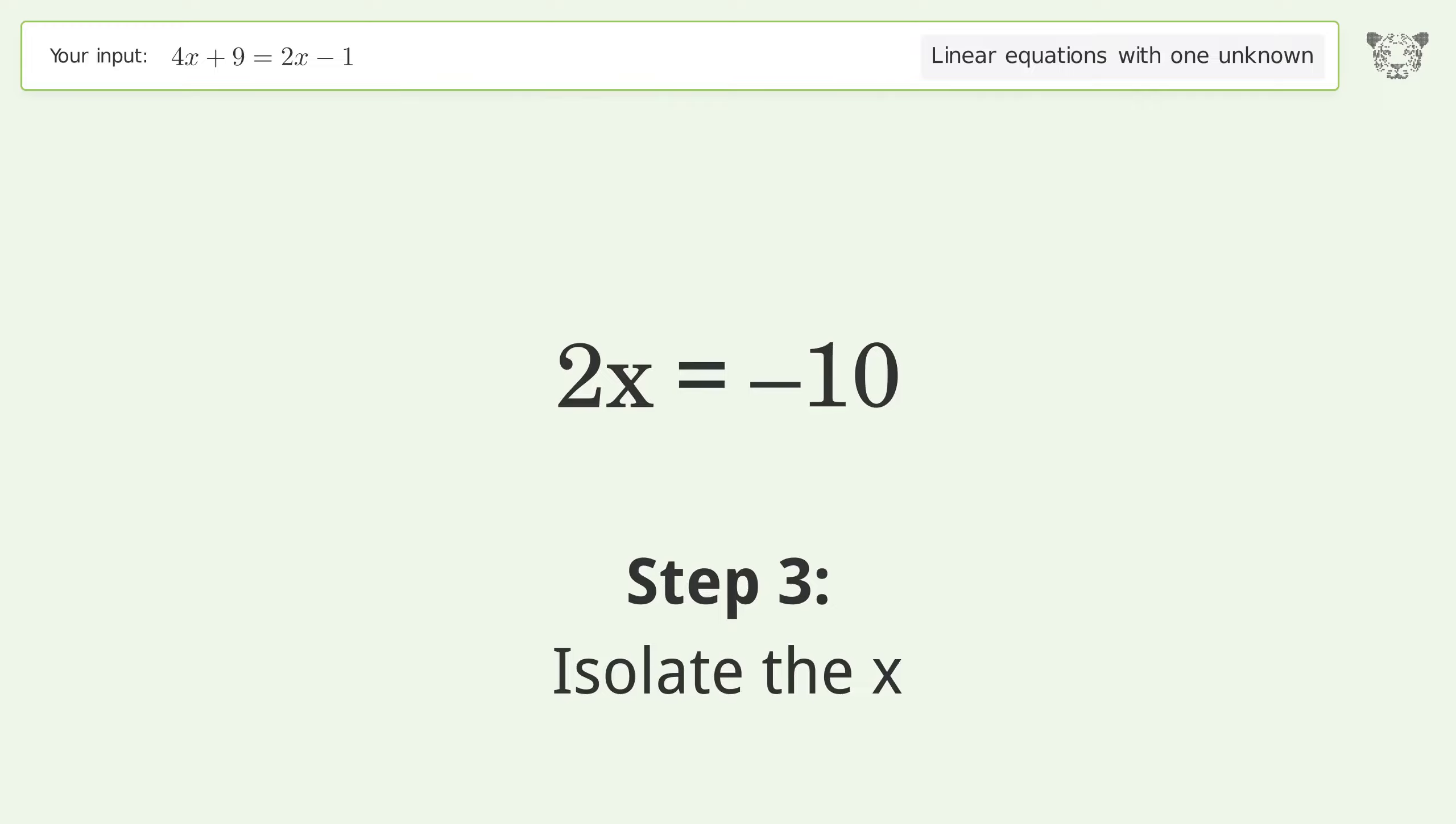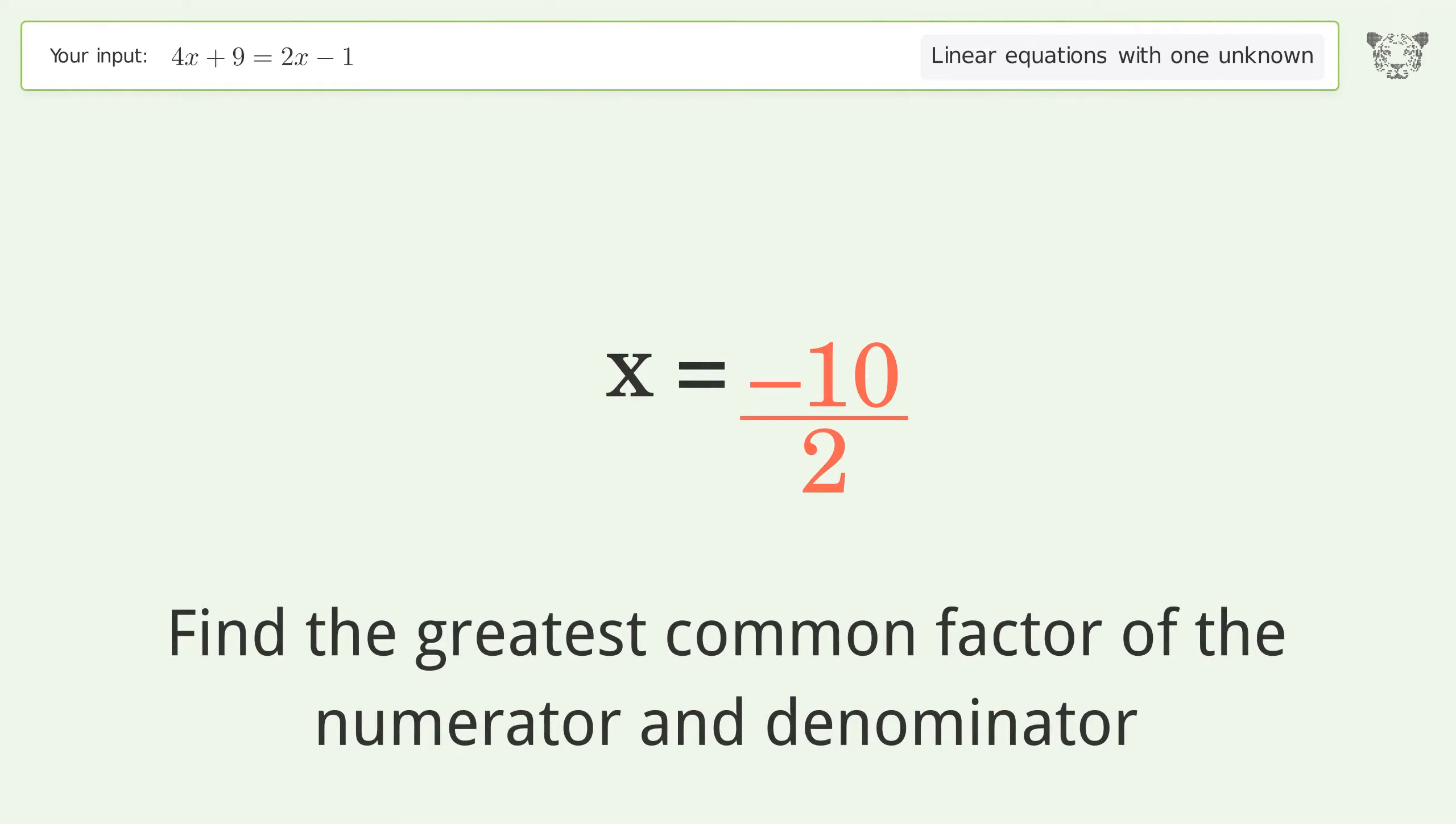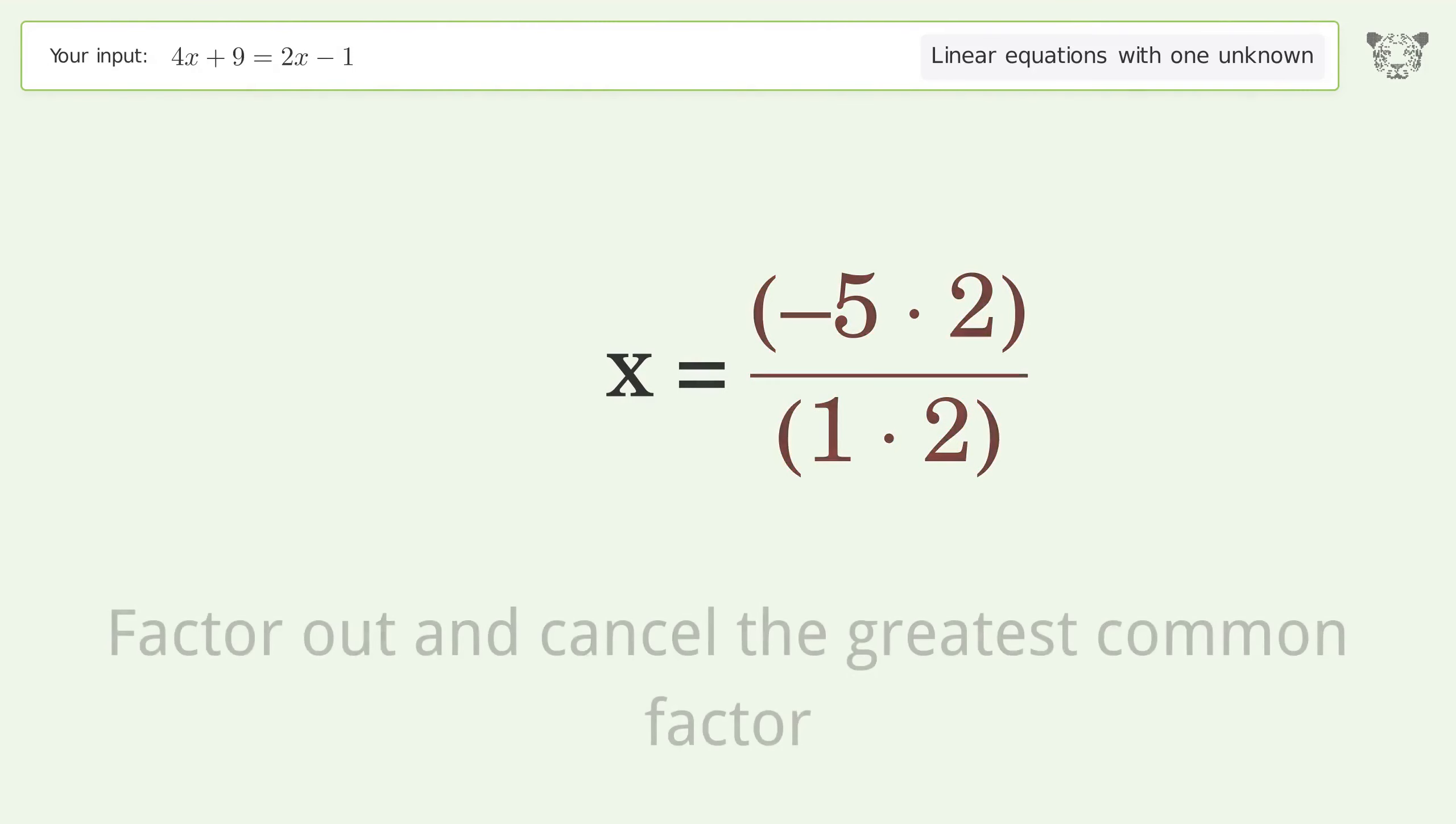Isolate the x. Divide both sides by 2. Simplify the fraction. Find the greatest common factor of the numerator and denominator. Factor out and cancel the greatest common factor.